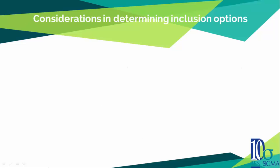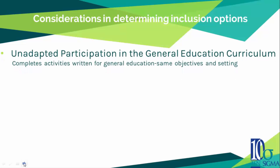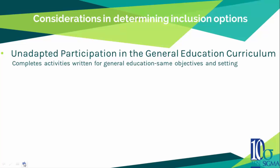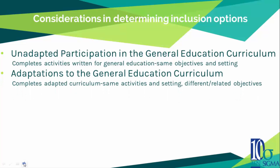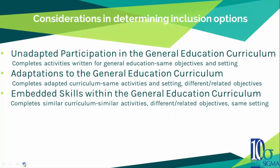Another consideration when working with students with multiple disabilities are the inclusion options. There are five main options. The first is unadapted participation in the general education curriculum — the student completes activities written for general education with the same objectives and setting. The second is adaptations to the general education curriculum, where the student completes adapted curriculum with the same activities and setting as general education, but with different related objectives. The third option is embedded skills within the general education curriculum — the student completes similar curriculum with similar activities but different related objectives in the same setting.